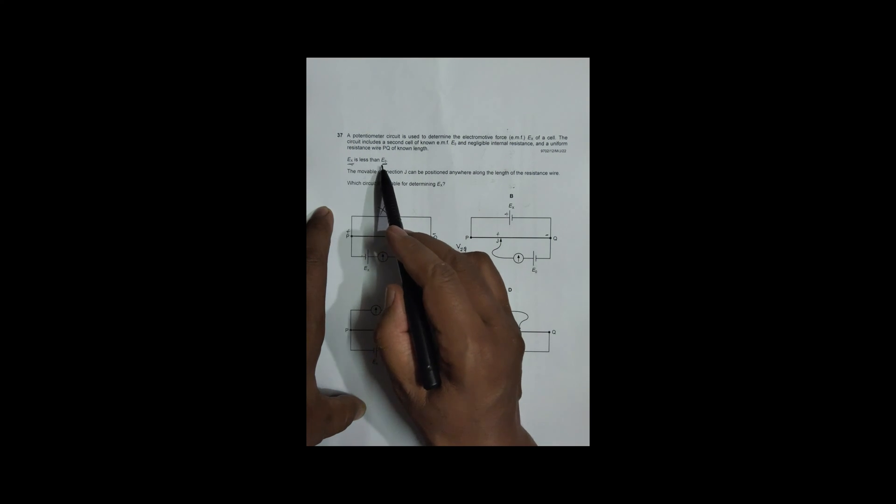Now here, what happens is, we have got a plus here. So this should be plus, this should be minus. So this oppose, yes, it's okay. And what happens here is, this E0 is equal to, during balancing condition, this E0 is equal to PD here. So it is VJQ. And that will be equal to a length JQ divided LPQ into Ex, according to this diagram. So that means what I'm saying, LPQ is large, JQ is small. So this gives that E0 is small than Ex. This equation gives, this arrangement gives, E0 is less than Ex. But here it is said that Ex is less than E0. So this also not correct.